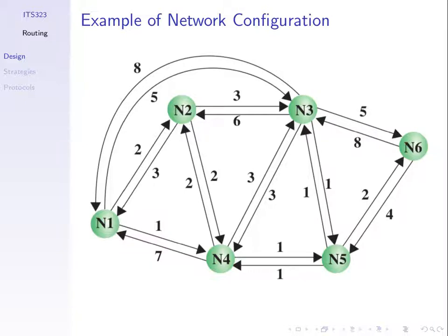To traverse one link is called one hop. The number of hops in the least cost path from node 1 to node 6 is three: the path 1-4-5-6 has three links and three hops. Hops are another way to count the number of links, and some systems find paths by minimizing hops. However, the path with the least hops is not necessarily the best path. The path with the least hops from 1 to 6 is 1-3-6, just two hops, but its cost is higher.